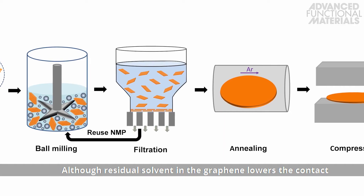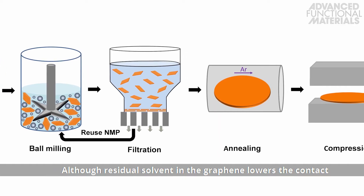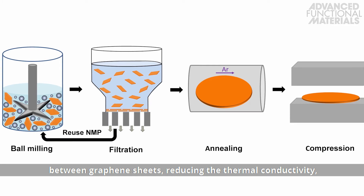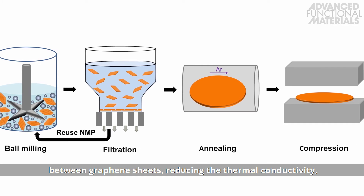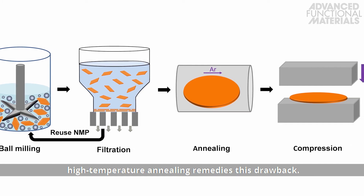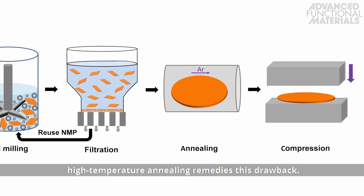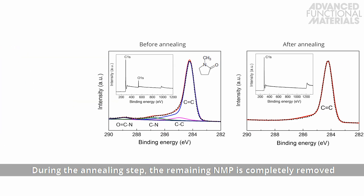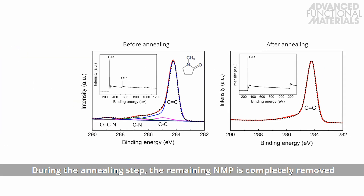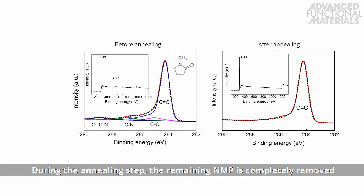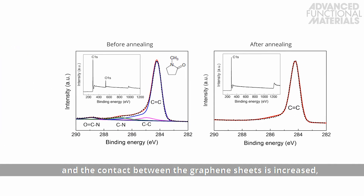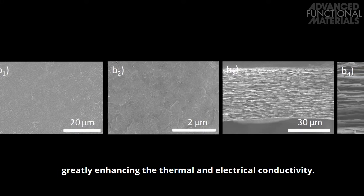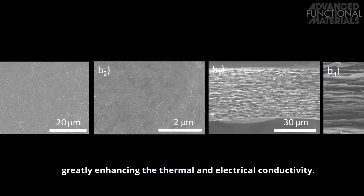Although residual solvent in the graphene lowers the contact between graphene sheets, reducing the thermal conductivity, high-temperature annealing remedies this drawback. During the annealing step, the remaining NMP is completely removed and the contact between the graphene sheets is increased, greatly enhancing the thermal and electrical conductivity.